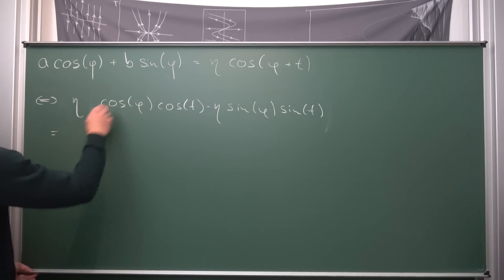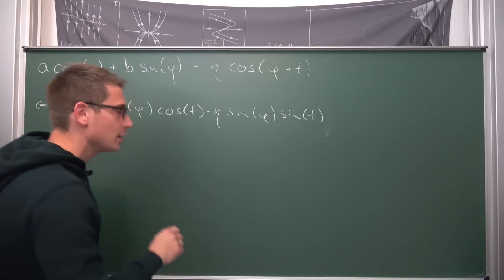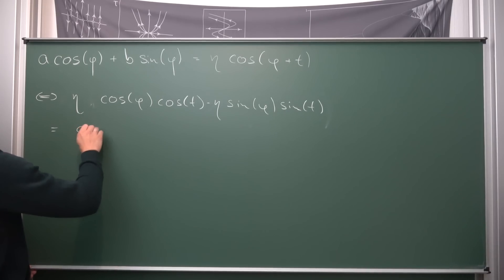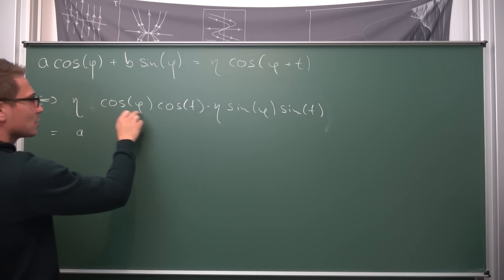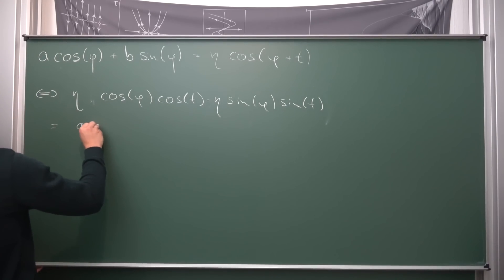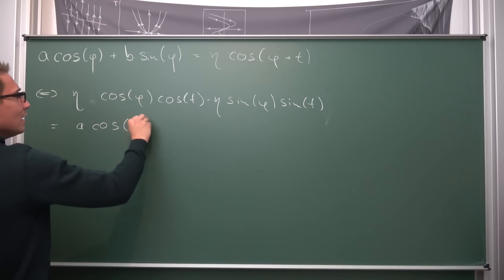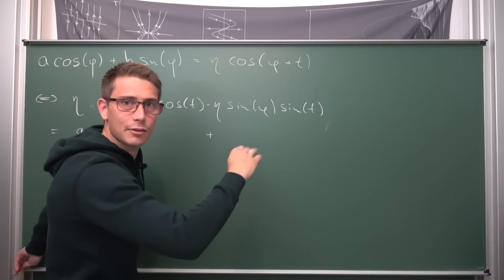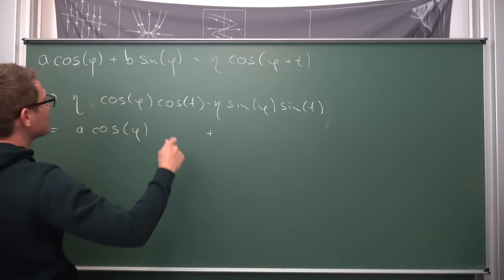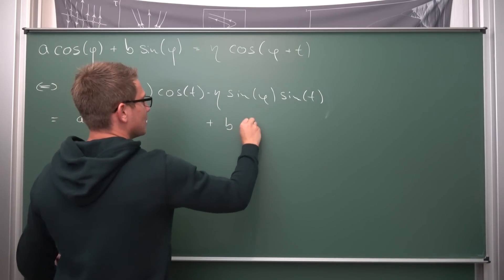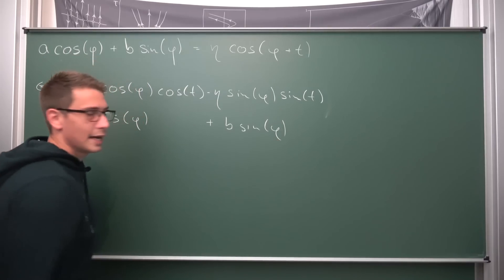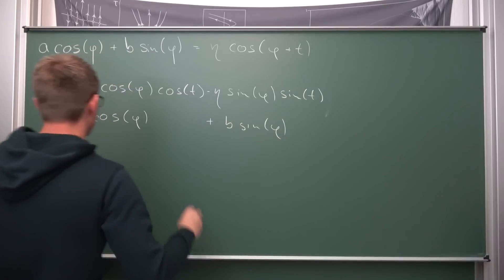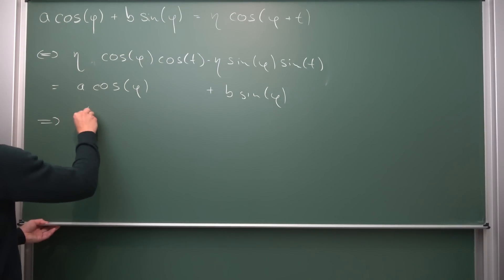Namely, I'm going to write it underneath. You can put an equivalence right here if it's not an equation. Once again, it needs to be a statement. Now, on the one hand, we get that eta times the cosine of phi times the cosine of t is equal to a times the cosine of phi. And then we are also going to get that this part right here, negative eta sine of phi sine of t, is also equal to b times the sine of phi.